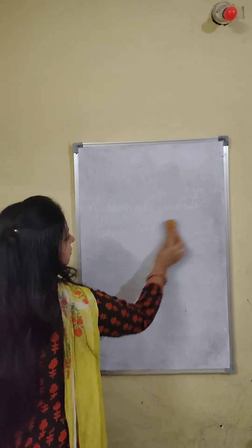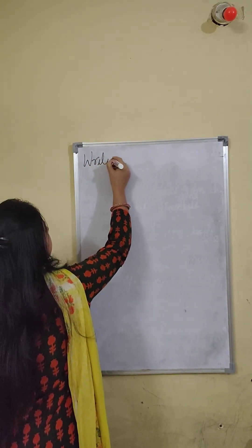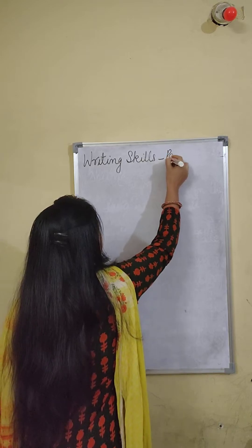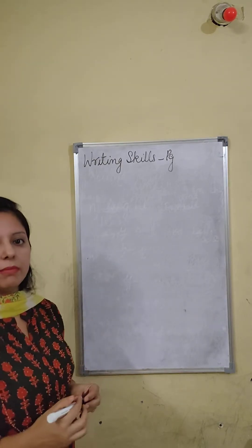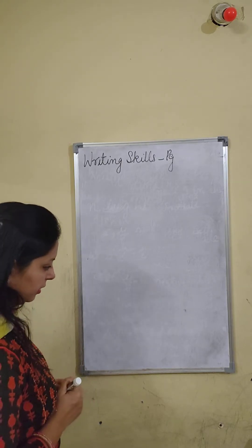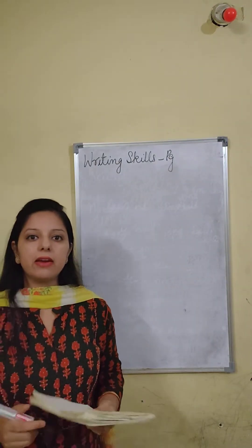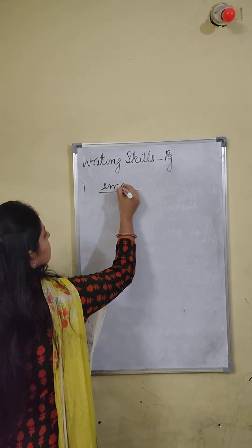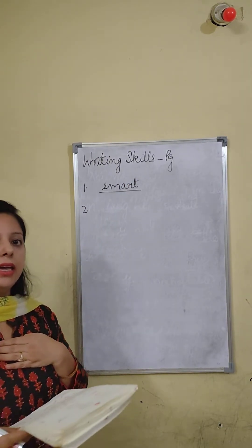Now let's do the next exercise in your book — that is writing skills, page 30. So it's a poem about your teacher. I will be reading it and you will be trying to fill it in. My teacher is caring, kind and smart. She resides deep in my heart.